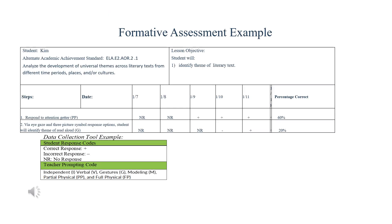This is an example of how to collect data via the alternate academic achievement standards that aligns to the South Carolina College and Career Ready Standards. This data collection tool can be used for any standard or lesson objective. It includes student response codes and teacher prompting codes. Student response codes include a correct response — a plus — an incorrect response — a minus — or no response, recorded as NR.